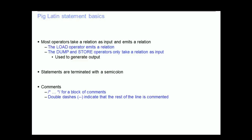All pig statements, both in a script and when running in the grunt shell, are terminated by a semicolon. In a script, it's possible to include comments. All statements between a slash-asterisk and an asterisk-slash are commented. Double dashes will comment the rest of the line.